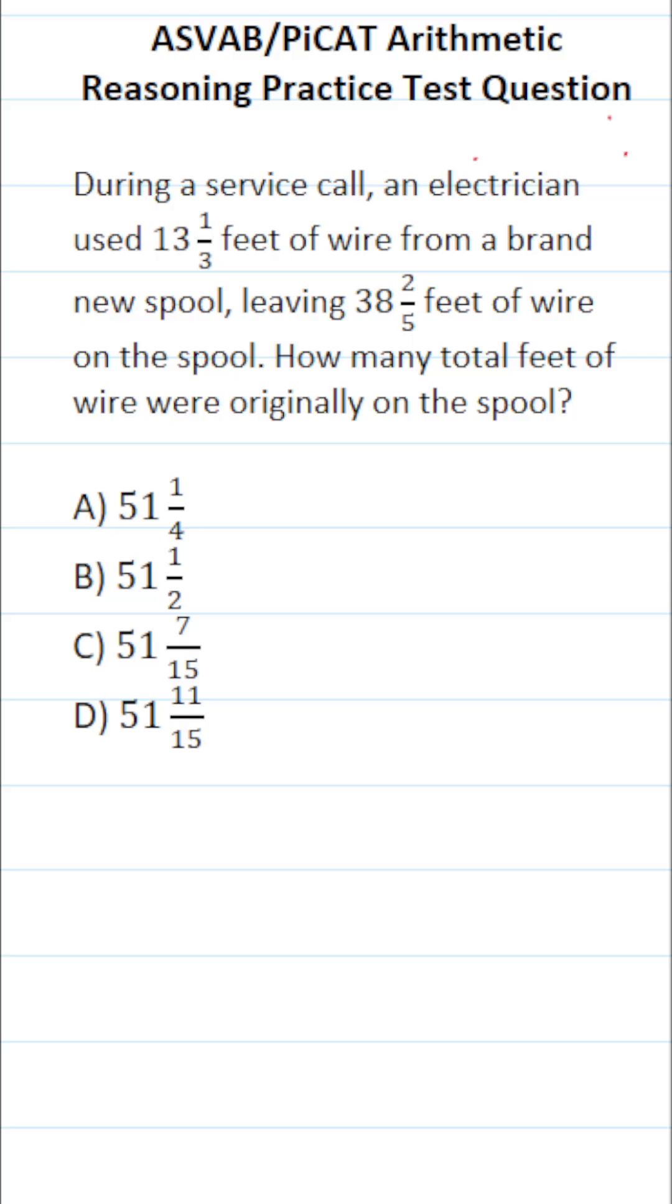This arithmetic reasoning practice test question for the ASVAB and PiCAT says, during a service call, an electrician used 13 and one-third feet of wire from a brand new spool, leaving 38 and two-fifths feet of wire on the spool. How many total feet of wire were originally on the spool?